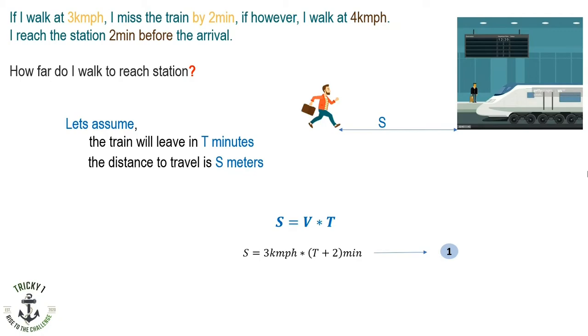And the second data is, if I walk at 4 km per hour, I reach the station 2 minutes before the arrival. So the distance I traveled, S, equals 4 km per hour times T minus 2. Why? Because the train will leave in T minutes but I reach the station 2 minutes before, so the time taken to reach the station is T minus 2 minutes.